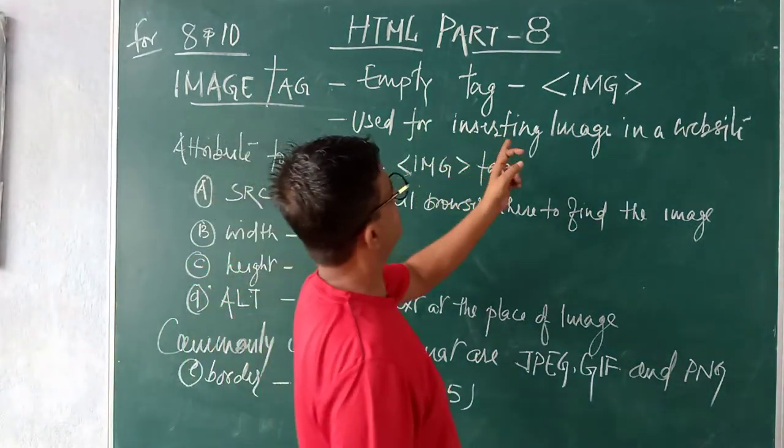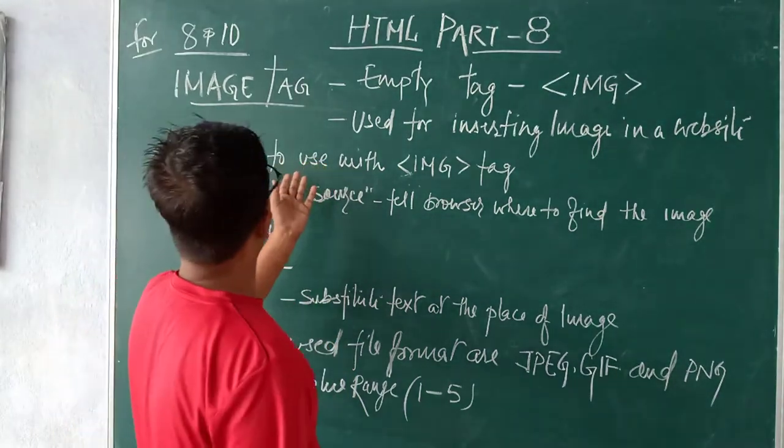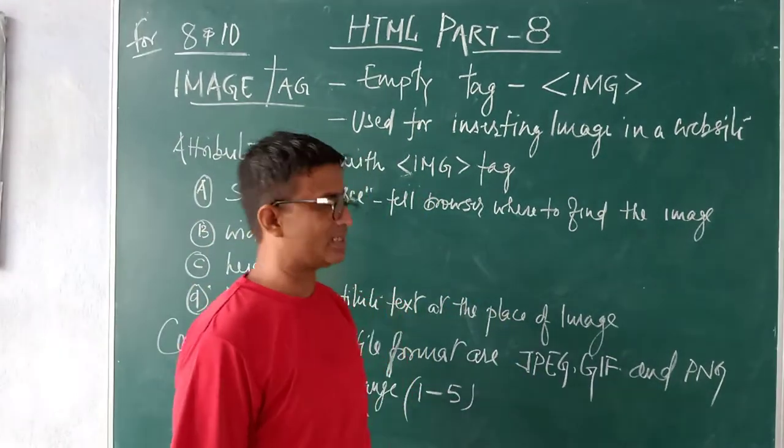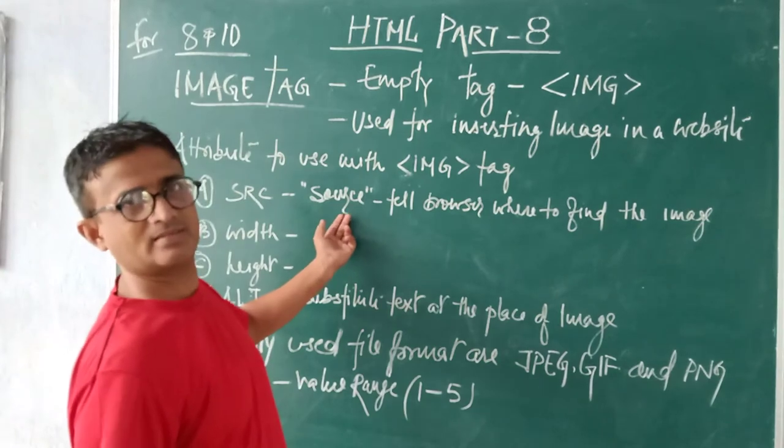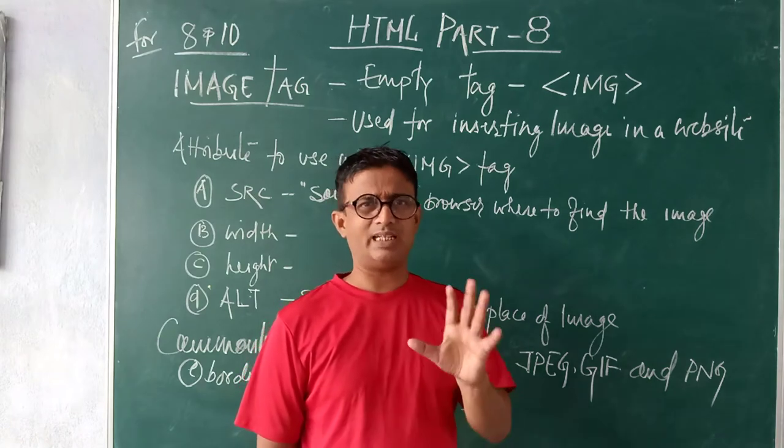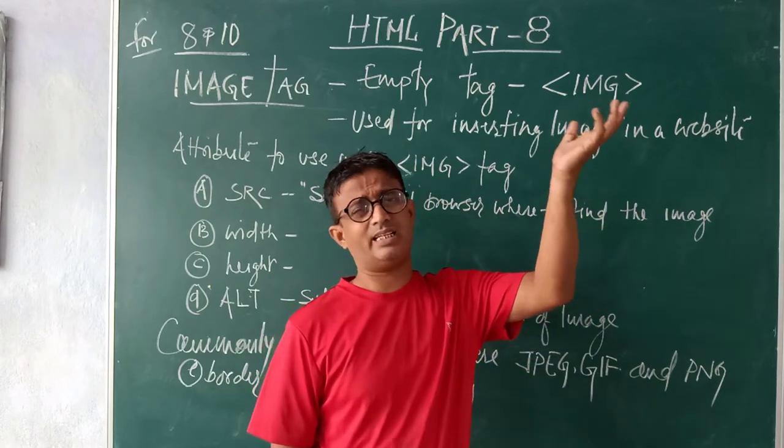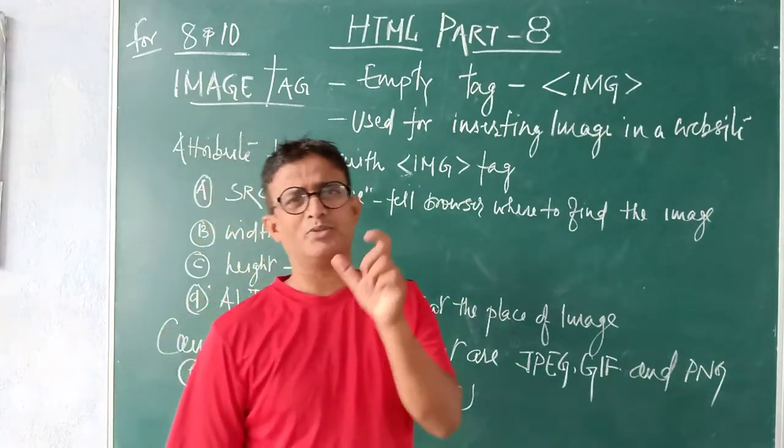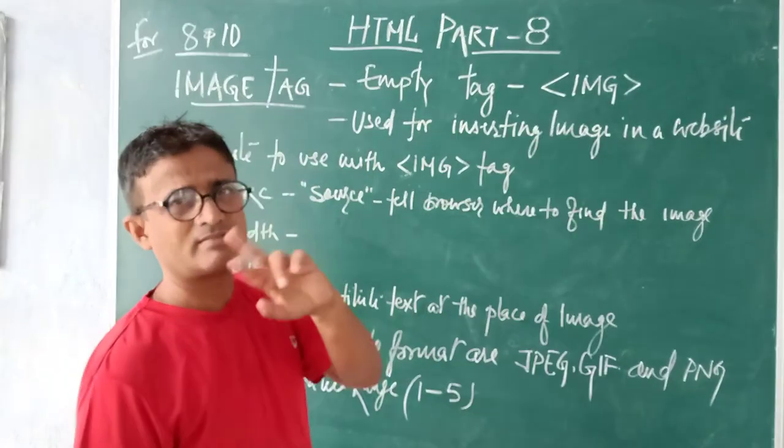Second, attributes for inserting image in a website. We have to use some attributes with IMG tag. First attribute is SRC. SRC stands for source. The source can be an image in your desktop, in your system folder, or somewhere else. If any website image you want to insert, you will have to type the complete URL of that particular image.